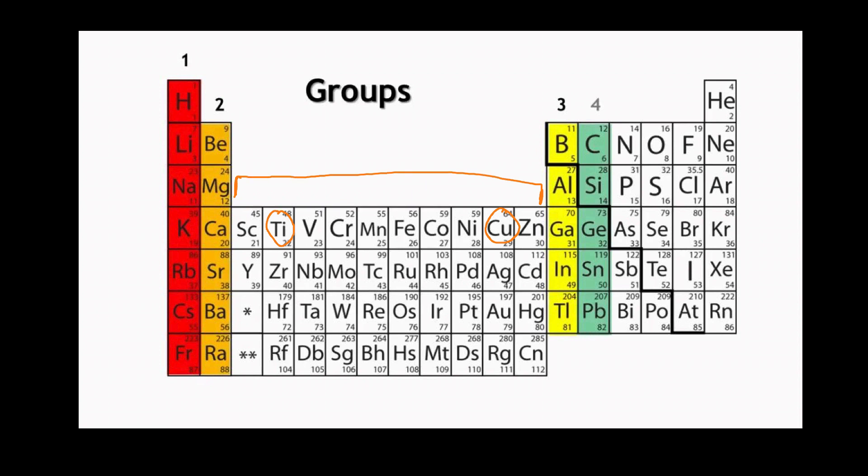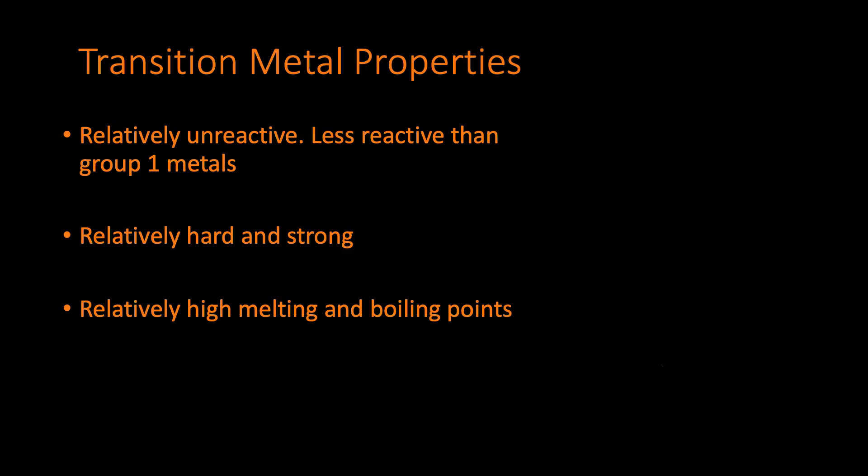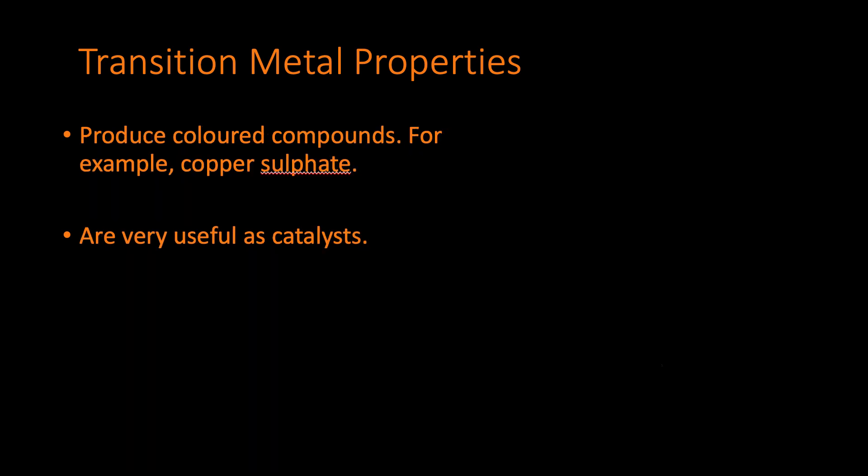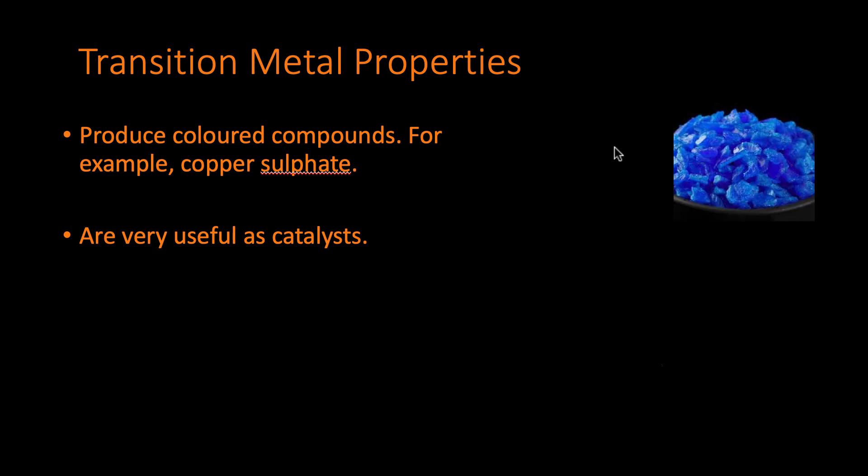Alright, so let's have a look at some more properties. Now transition metals also produce colored compounds. An example of this is copper sulfate, which is actually blue in color. Okay, here actually is copper sulfate.